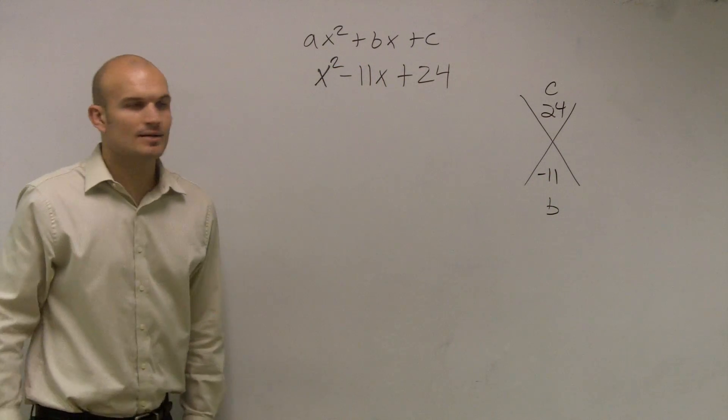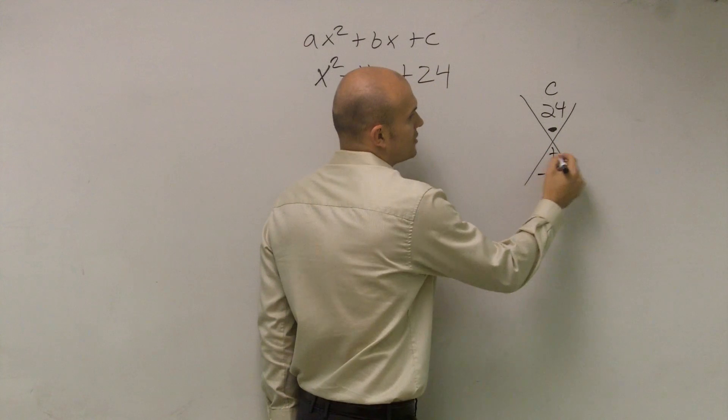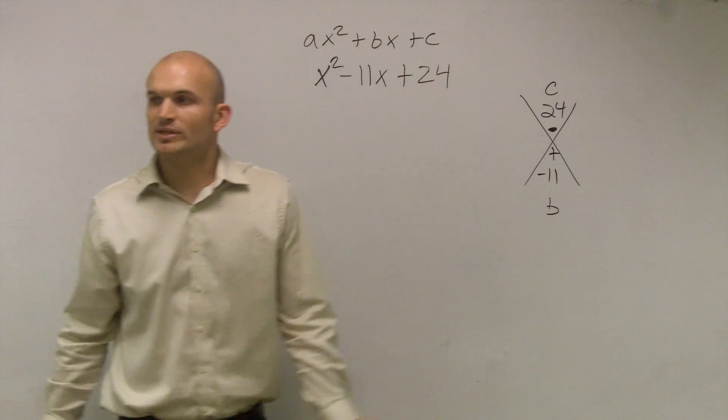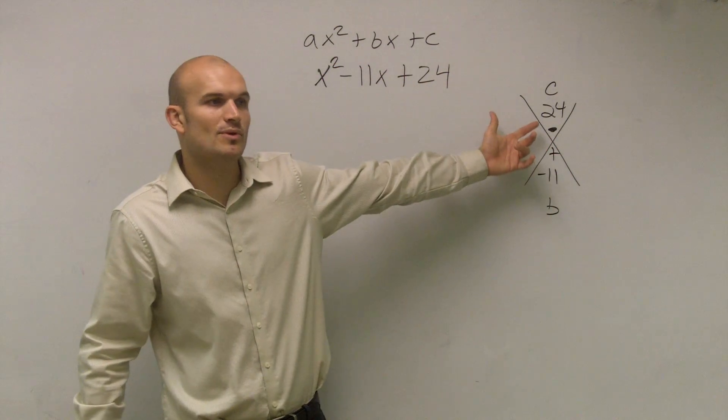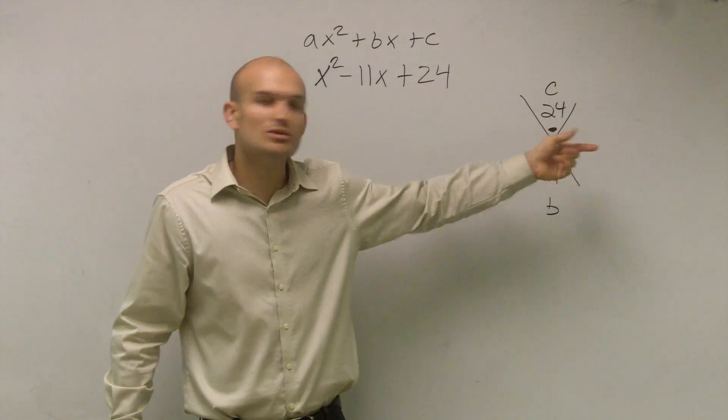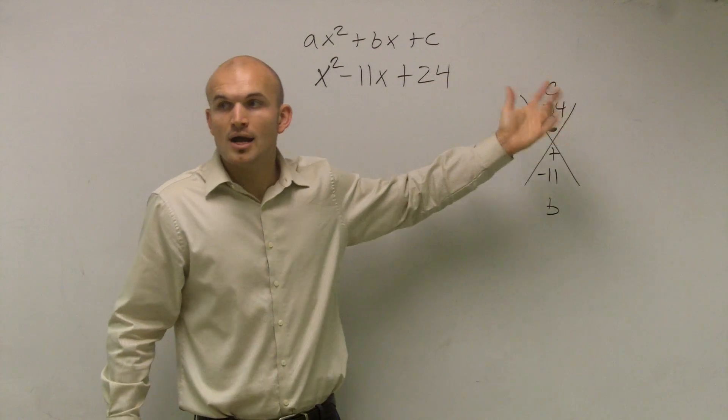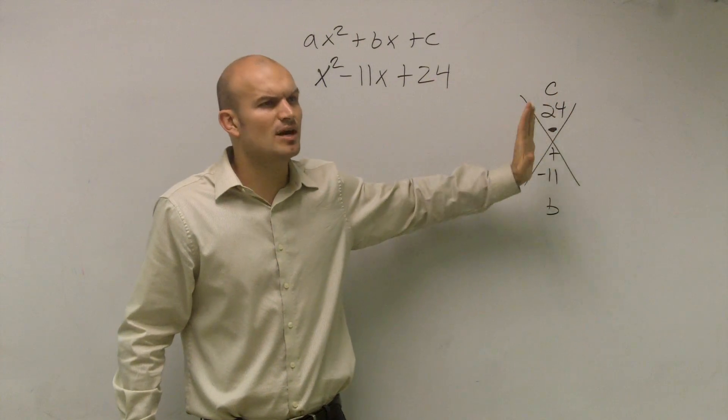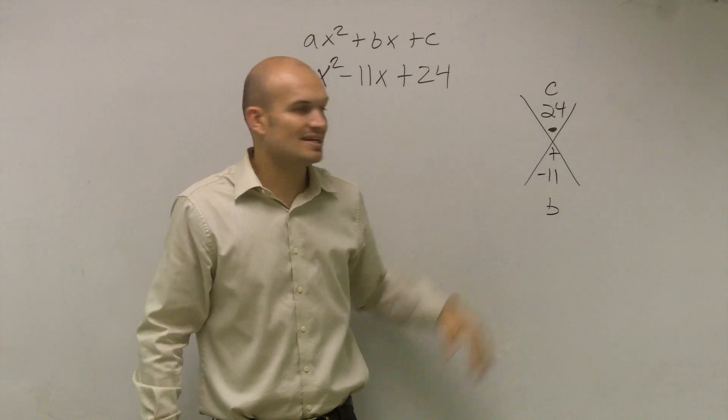Now, what we did was we wrote a little multiplication symbol up here and a little addition symbol down here. So what that told us to do is to take the factors of 24, because those are going to be the two numbers that multiply to give you 24, but then we need to look at a unique set of numbers that are going to add to give us negative 11.